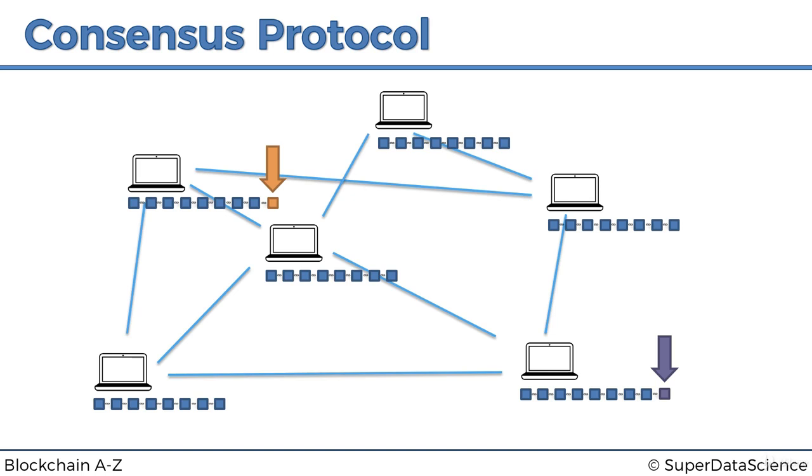This is very similar to the Byzantine fault tolerance that we talked about before, the Byzantine generals problem. So what happens? Well, this block, since it's correct—we're going to assume there's no malicious intent—is going to be propagated through the network. So it got relayed to these nodes, they checked it and accepted it. This one got relayed there.